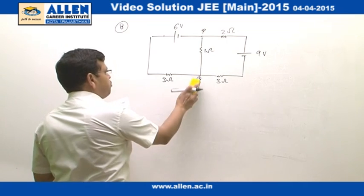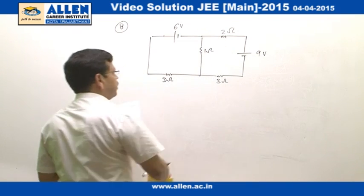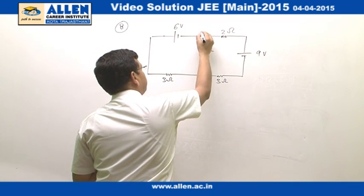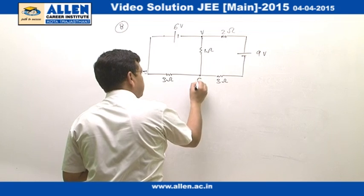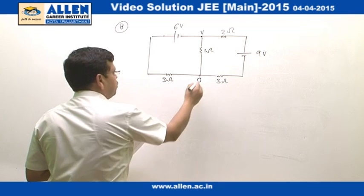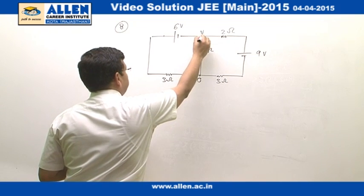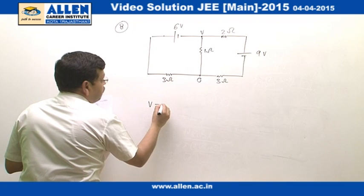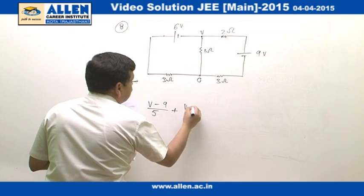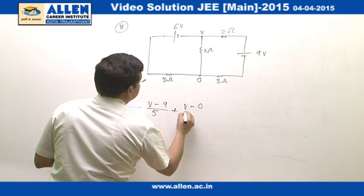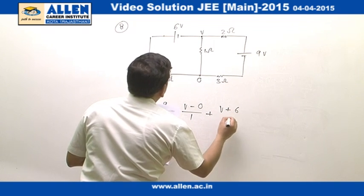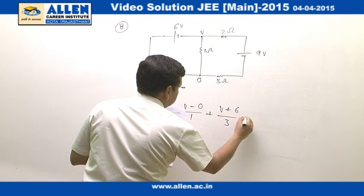If we do the simple analysis with the help of point potential method, let us assume that potential of this point is V and this has got potential 0. If we use nodal analysis or point potential method here, we will get V minus 9 divided by 5 plus V minus 0 divided by 1 plus V plus 6 divided by 3 equal to 0.